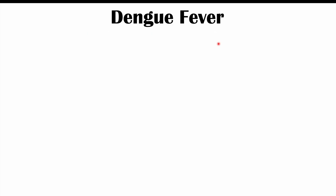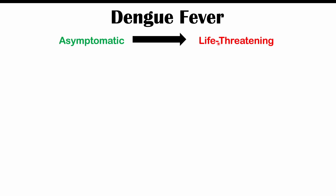When individuals get infected with dengue fever, it's going to have a wide variety of clinical presentations. It can be asymptomatic in some individuals — meaning they have no symptoms at all — while in others there may be life-threatening complications. We can often see asymptomatic cases in children, for instance.